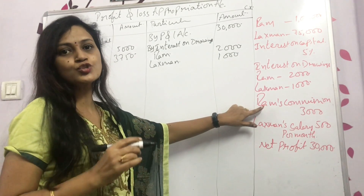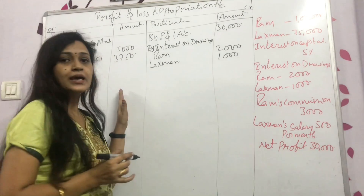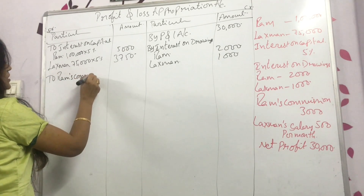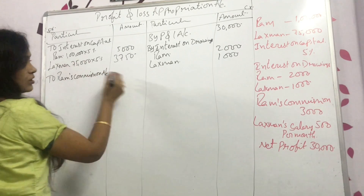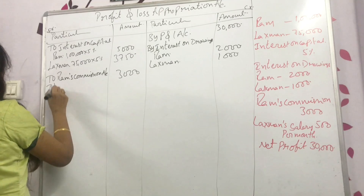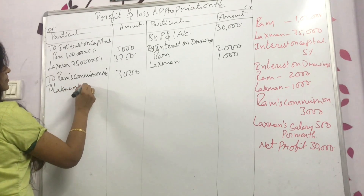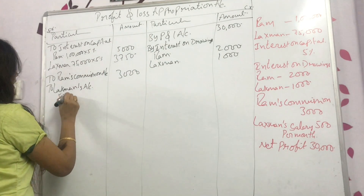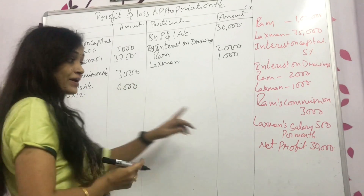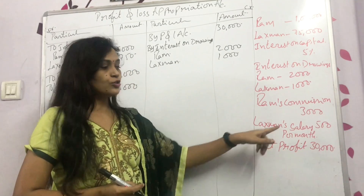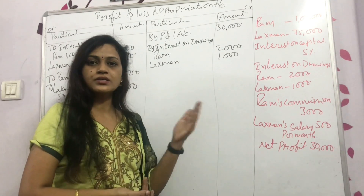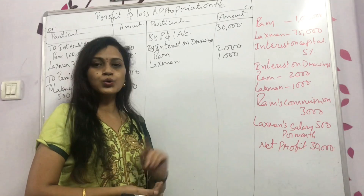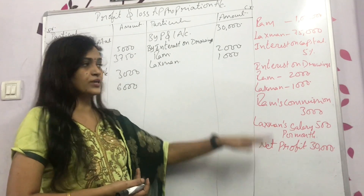Remuneration to partners is taken on the debit side. Write: To Ram's capital account (commission) — 3,000. Next, To Lakshman's account (salary): 500 per month, so convert to per annum — 500 into 12 equals 6,000. If given quarterly, multiply by 4; if half-yearly, multiply by 2 — calculate accordingly.